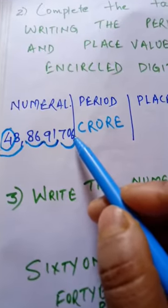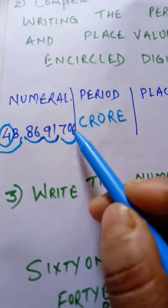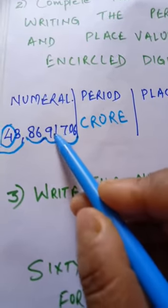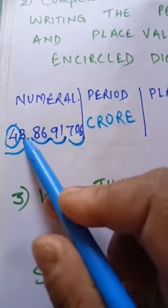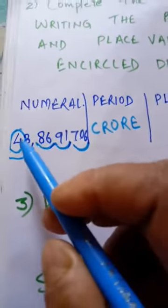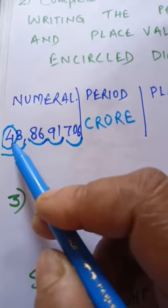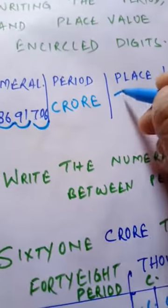Starting from the extreme right side, the place of the digits: ones, tens, hundreds, thousands, ten thousands, lakhs, ten lakhs, crores, ten crores. So here the place of this 4 is ten crore.